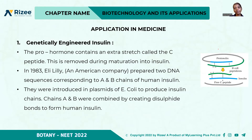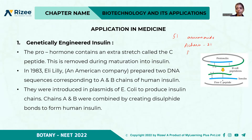If you take the structure of insulin, it has about 51 amino acids. The A chain has about 21 amino acids and the B chain has about 30 amino acids, and there is a connective C peptide which is removed during processing.